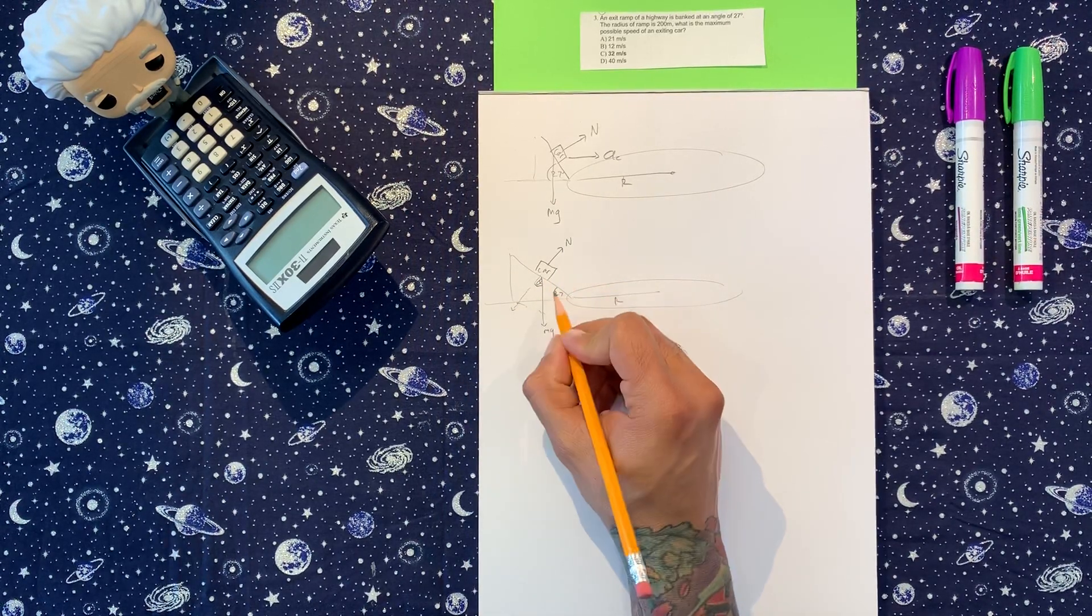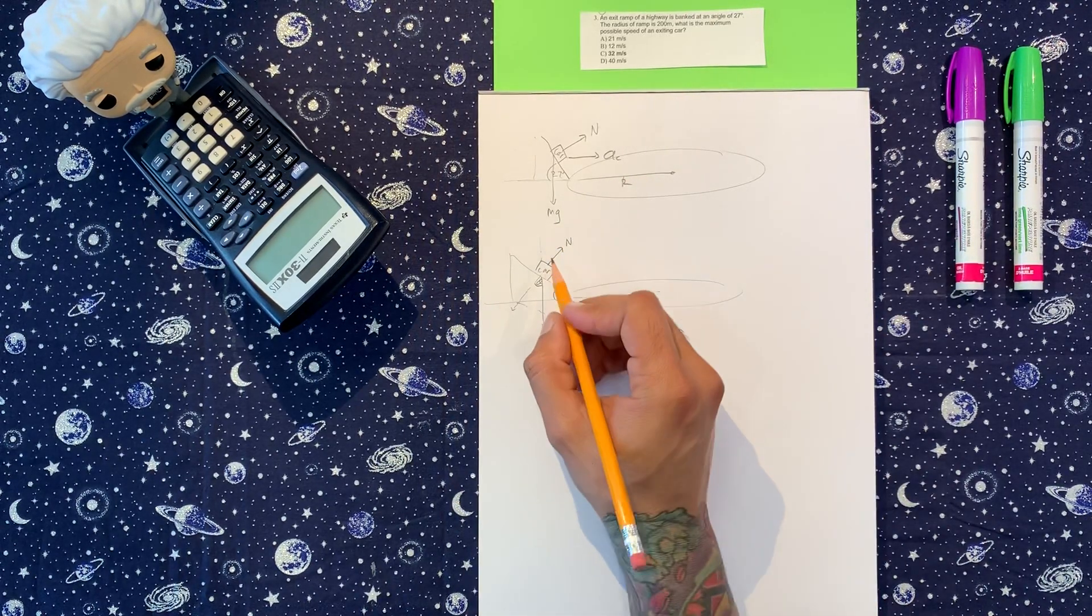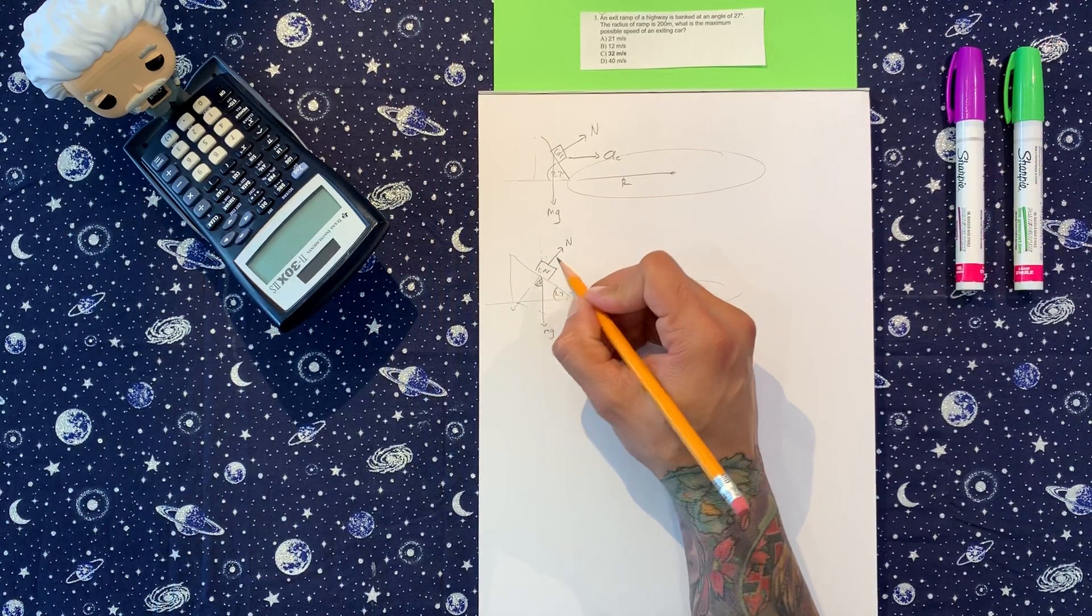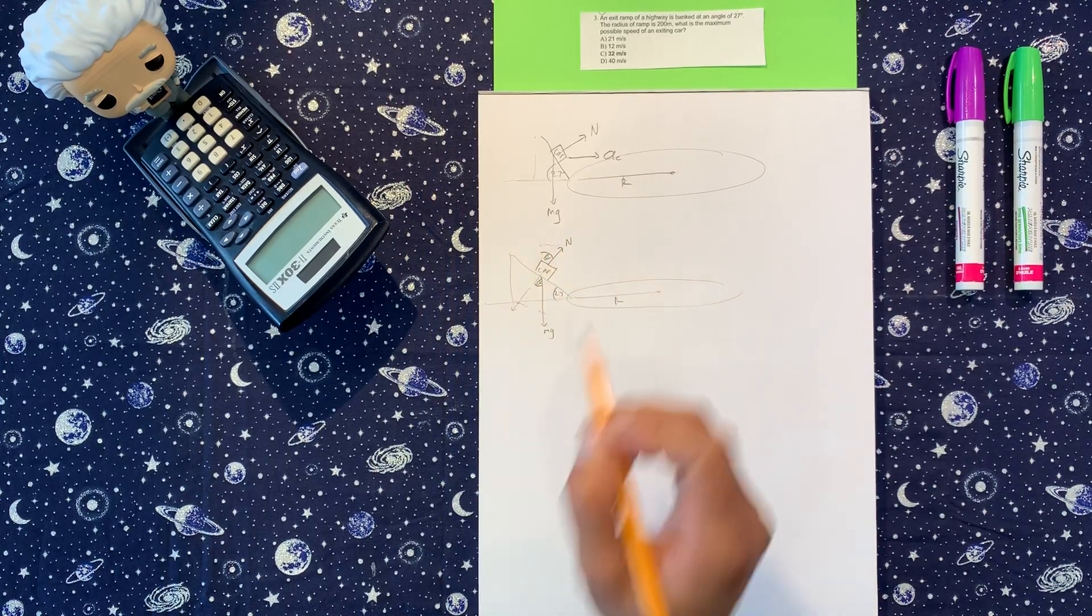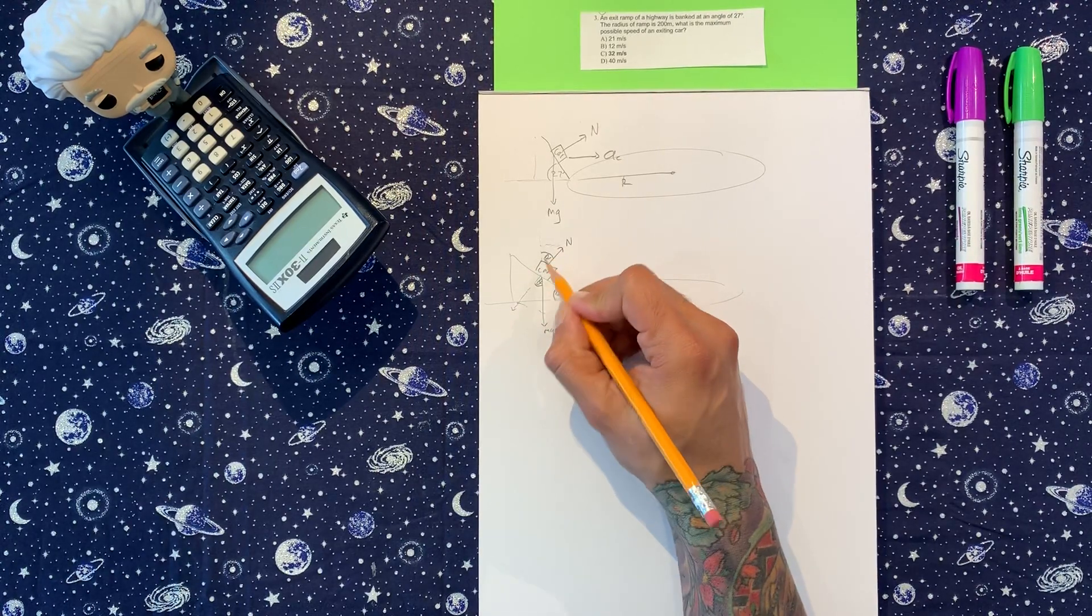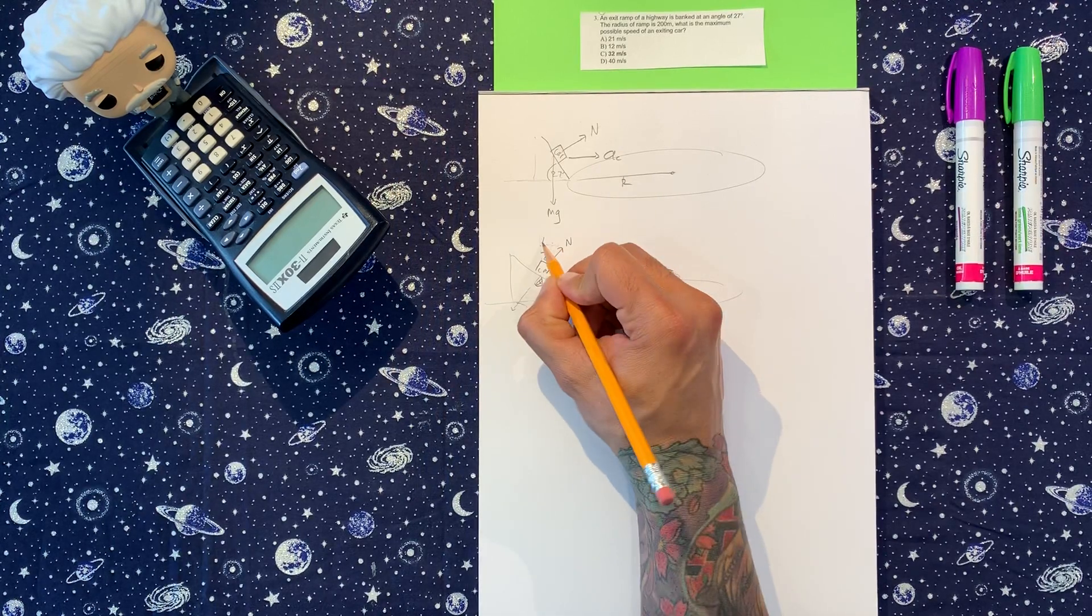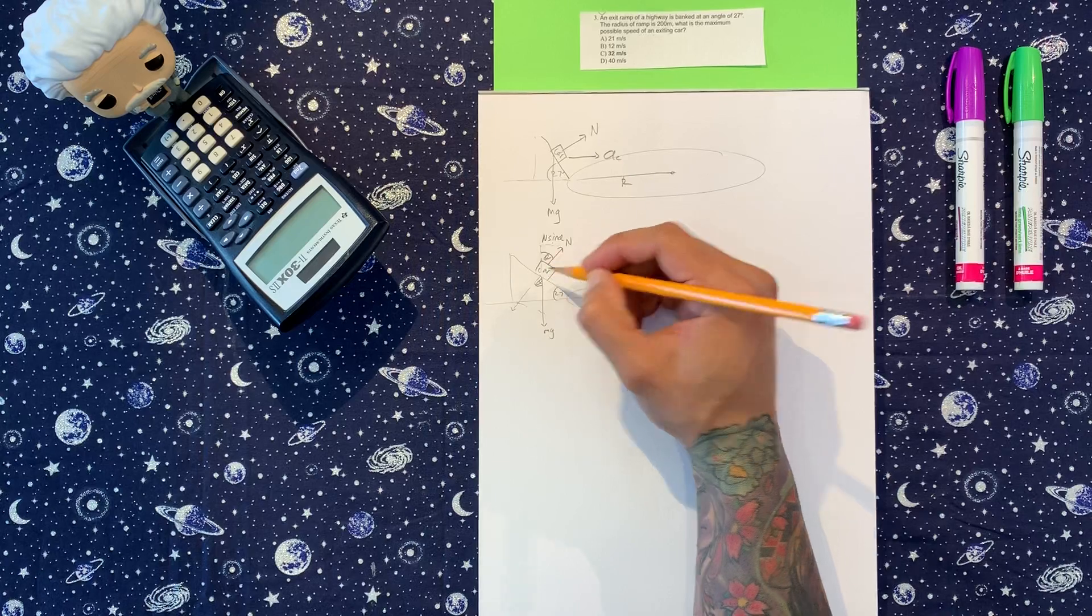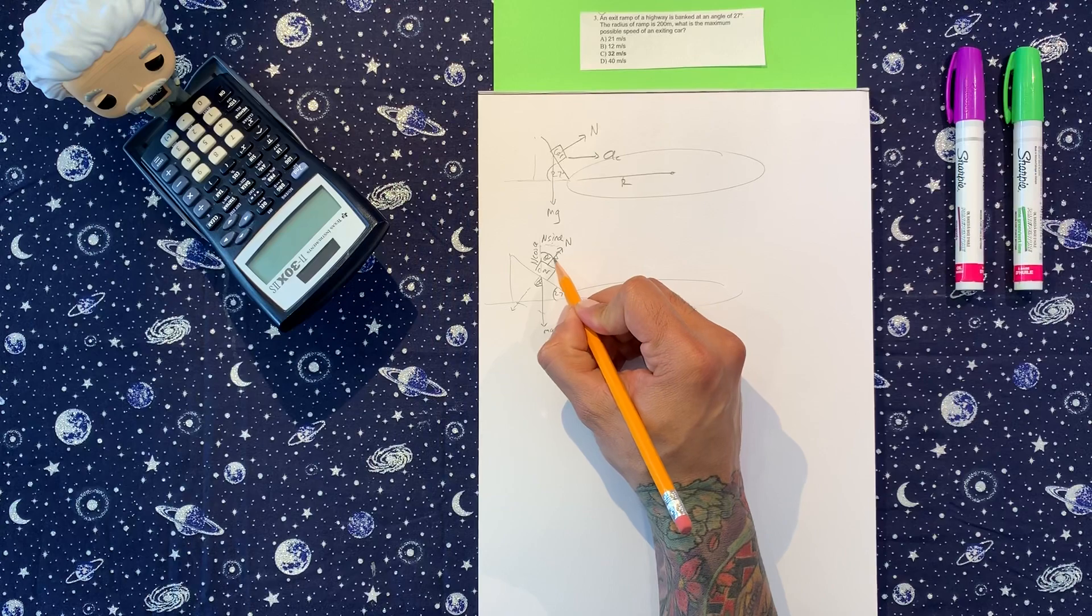You kind of have to just know this part, this triangle and this triangle, you can use the same reference angle. We're going to do opposite over hypotenuse. So this side is n sine theta, and this is adjacent, so this is going to be n cosine theta. Now we don't need this anymore.